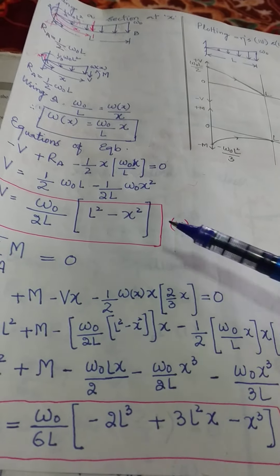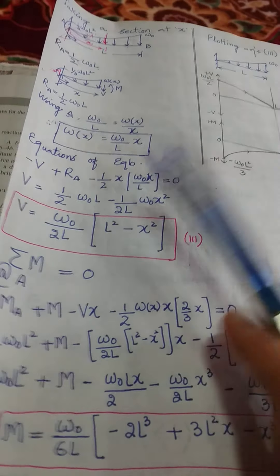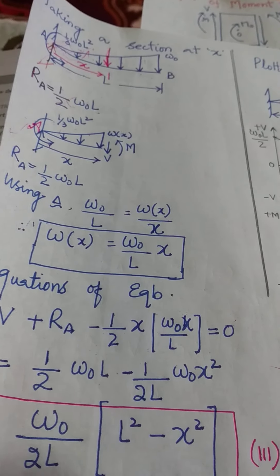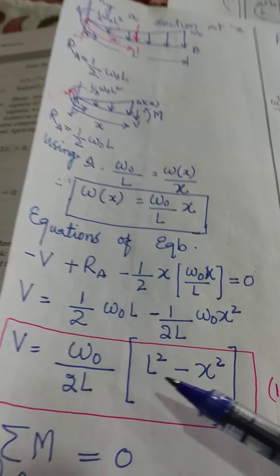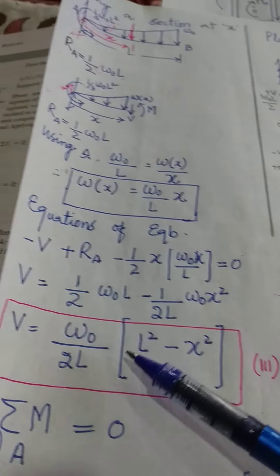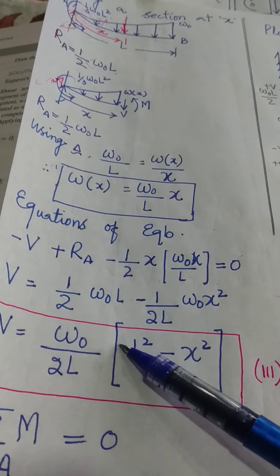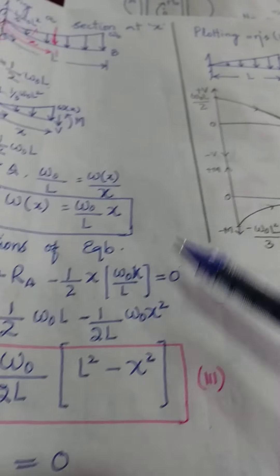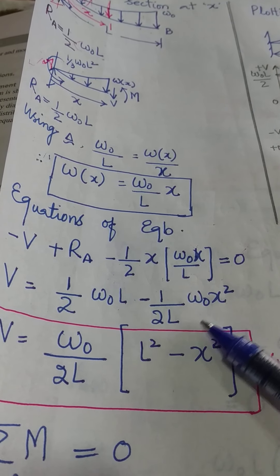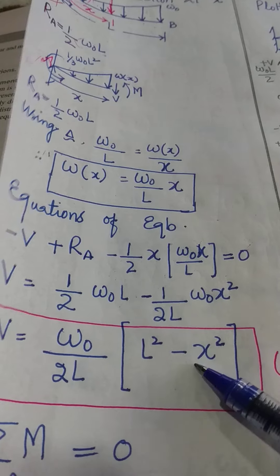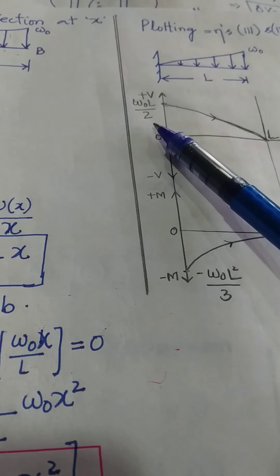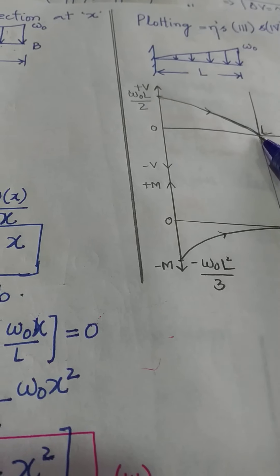Now we'll plot equation 3 and equation 4 to obtain the shear force and the bending moment diagrams. For the shear force plot, at X equal to 0, the value of V comes out equal to W naught by 2L into L squared, that's W naught L by 2, and it's positive. At X equal to L, this is L squared minus L squared, so V comes out equal to 0 — the shear force at the free end is 0. Since this is a quadratic equation, taking the second derivative gives a negative value, which shows the curve varies from X equal to 0 to X equal to L concave downwards.